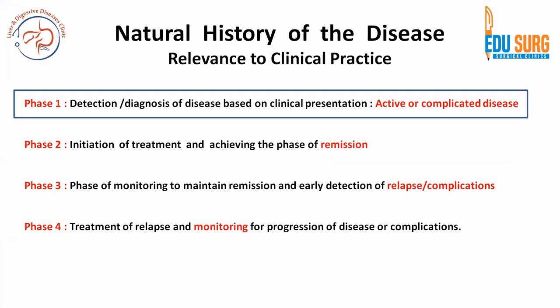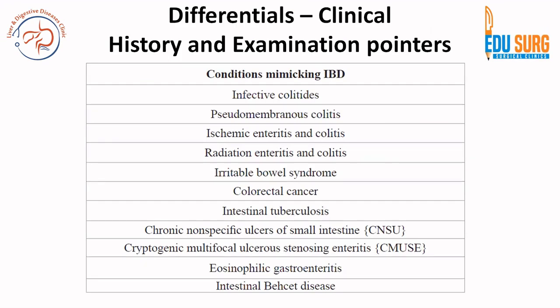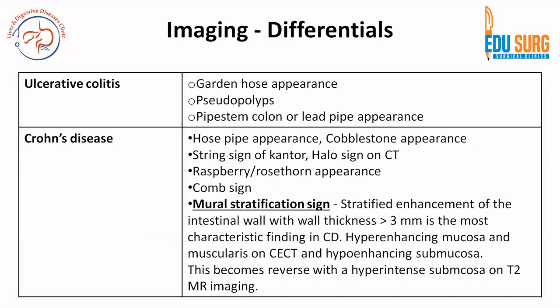As you are aware, or if you have not seen the previous video, this is a series of videos on inflammatory bowel disease and we are discussing phase 1 — detection and diagnosis of disease. We have already seen the clinical features, the differentials based on clinical features, the laboratory investigations useful for diagnosis of IBD and differential diagnosis, and the basics of imaging modalities. Now when we come to differentials on imaging, I am sure you can remember some of these differential diagnoses from our series, as these are the commonly seen conditions that can mimic inflammatory bowel disease.